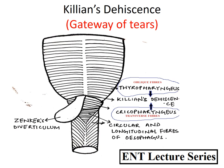This is the posterior view of the pharynx. Here we can see that the inferior constrictor muscle has two parts: first is thyropharyngeus, which has oblique fibers, and cricopharyngeus, which has transverse fibers.